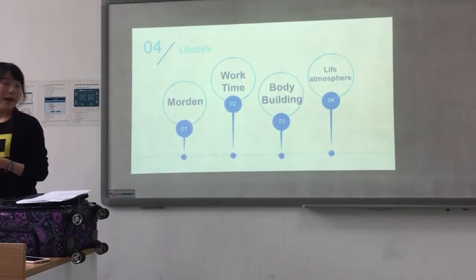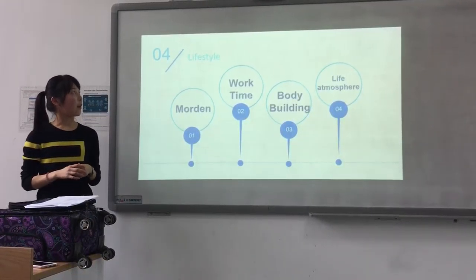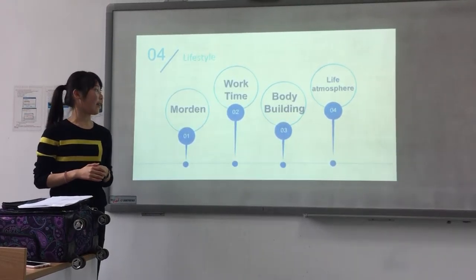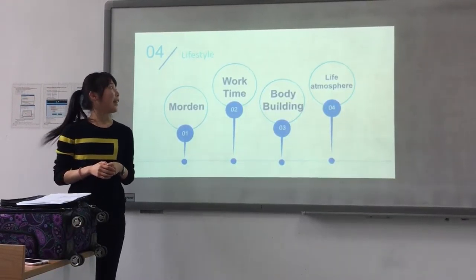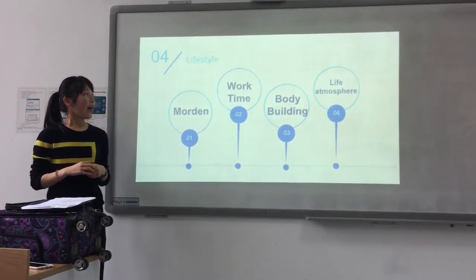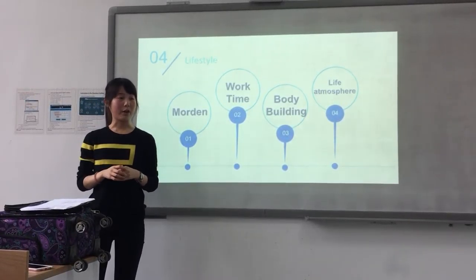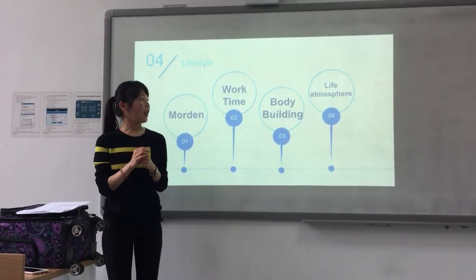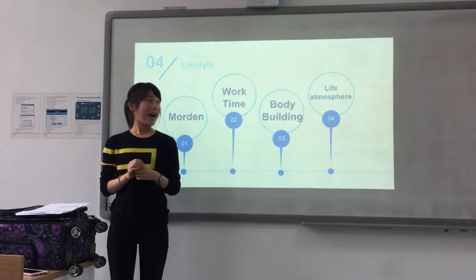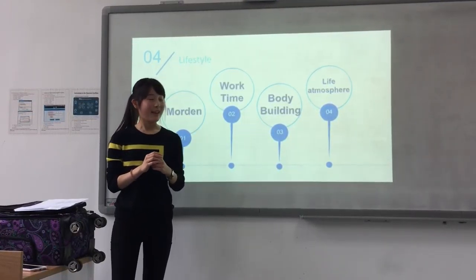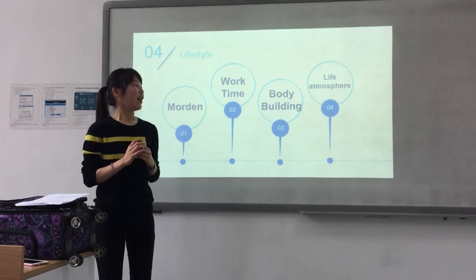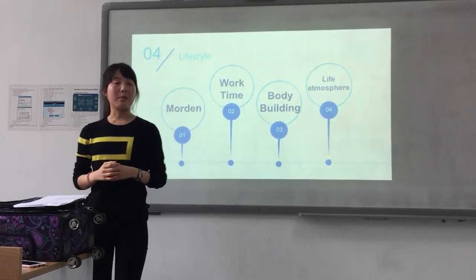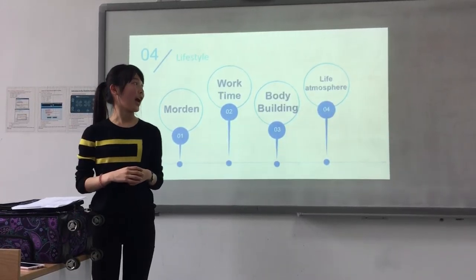The third body paragraph talks about lifestyle. Due to the fact that both Chinese people and Australian people live in modern cities, they need a modern lifestyle. For work time, they both work five days and relax two days. The difference is body building — Australian people pay attention to body building while Chinese people ignore it. Also, the living atmosphere in Australia is more quiet than in China.